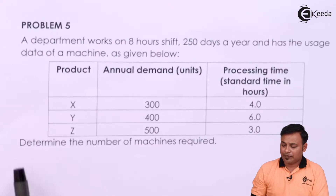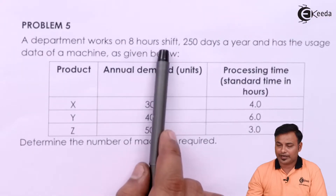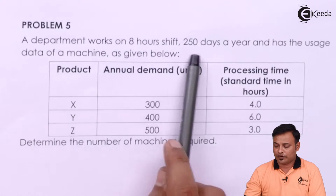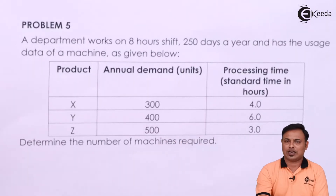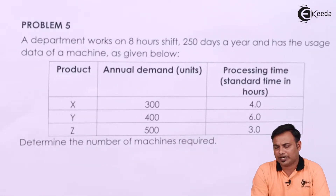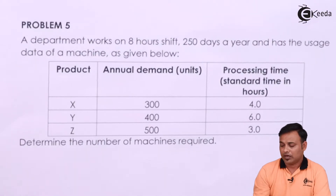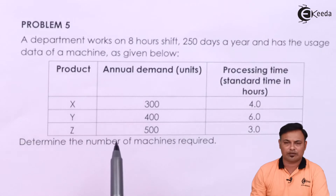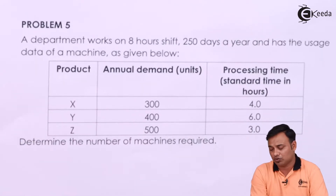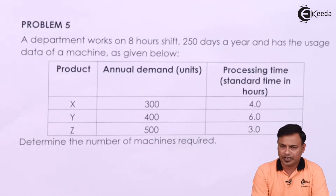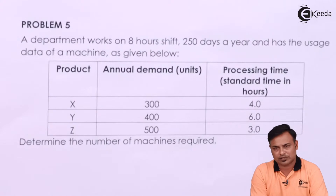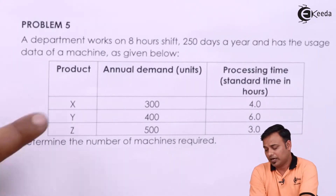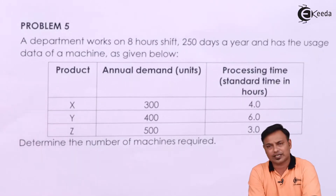A department works on an 8-hour shift, 250 days a year, and has the usage data of a machine as given below. They have a machine that is used for 250 days and daily they use it for 8 hours. They are using that machine to make 3 products: X, Y, and Z.